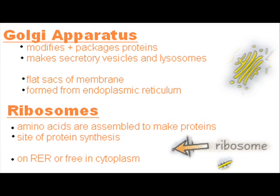The Golgi apparatus is a group of fluid-filled flattened sacs. Vesicles are often seen at the edges of the sacs. It processes and packages new lipids and proteins. It also makes lysosomes.